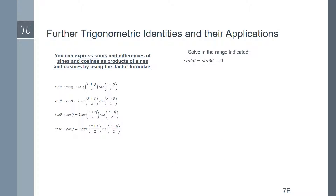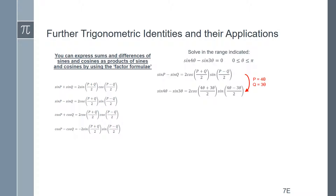Solve in the range indicated: sine(4θ) minus sine(3θ) equals 0, in the range 0 to π. We can use the factor formula to transform this from two separate sine terms into something we can actually solve. Setting p = 4θ and q = 3θ and substituting those values in, sine(4θ) minus sine(3θ) becomes 2 cos(7θ/2) times sine(θ/2), and that equals 0.